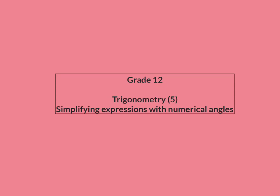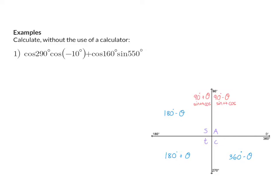In this lesson, we're going to continue simplifying expressions using our reduction formulas and identities, but this time we're going to look at numerical angles. In our first example, you can see that our angles are now constant values and don't have variables anymore, and that is why the question says calculate rather than just simplify, and they specify that you should do this without the use of a calculator.